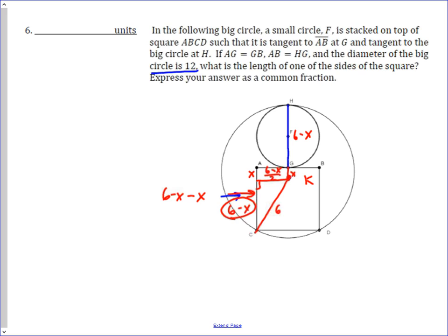So that allows us to apply the Pythagorean theorem: (6 minus x) over 2 squared, plus (6 minus 2x) squared, equals 6 squared.